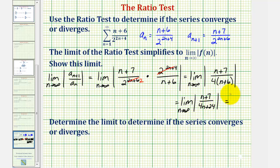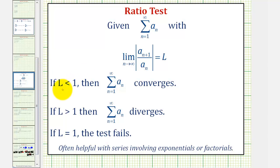To determine this limit, notice that the degree of the numerator and denominator are the same — both are degree one. So the limit as n approaches infinity equals the ratio of the leading coefficients, which is one over four, or one fourth. Since this limit equals one fourth, which is less than one, by the ratio test the infinite series converges.